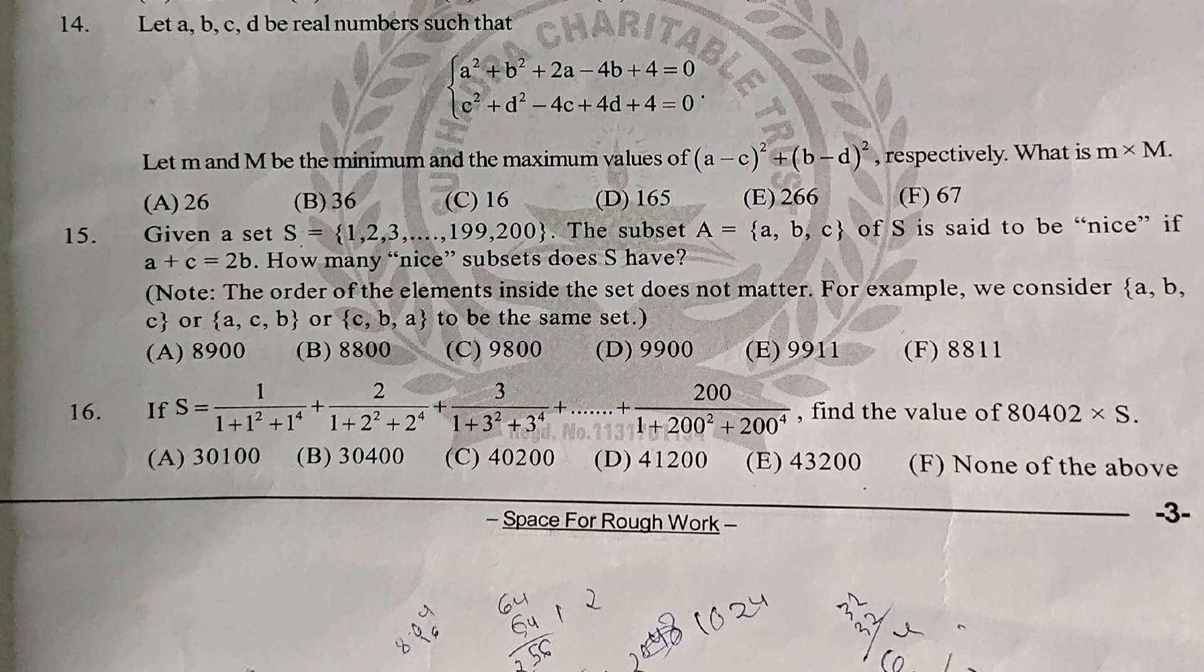If S = 1/(1 + 1^2 + 1^4) + 2/(1 + 2^2 + 2^4) + ... + 200/(1 + 200^2 + 200^4), find the value of 80,402 × S. The answer is 18, 40,200.